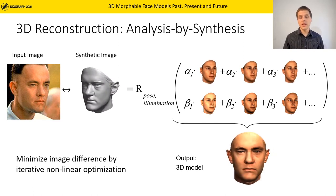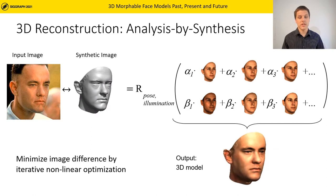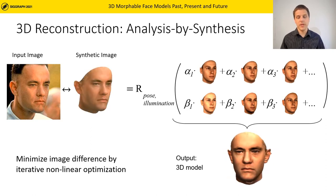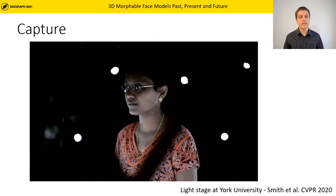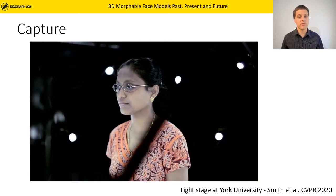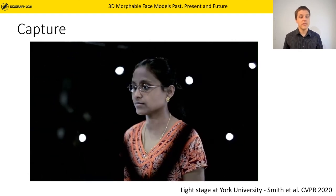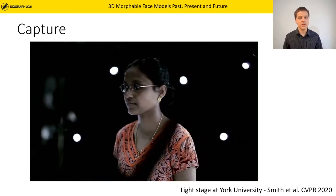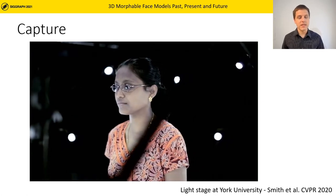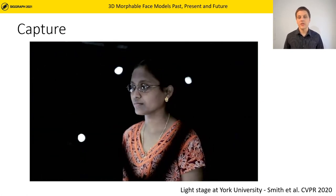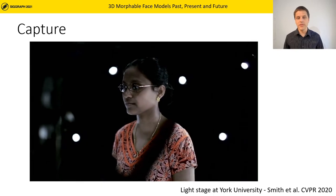The results you can see here are from the original SIGGRAPH 99 paper. In our survey paper we discuss all different components of a 3D Morphable Model, like the 3D capture setups that were developed. The setup you can see here is a light stage that can capture diffuse and specular albedo separately.